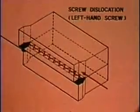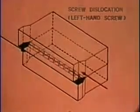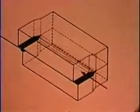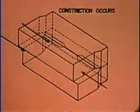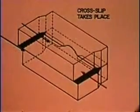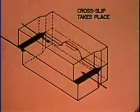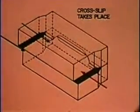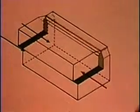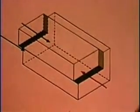A screw dislocation changes its plane of slip by constricting on the first plane and then bowing out onto the new one. The cross-slip progresses by migration of the constrictions along the dislocation. Gliding up the new plane to the top, it shears the top front quarter relative to the remainder.